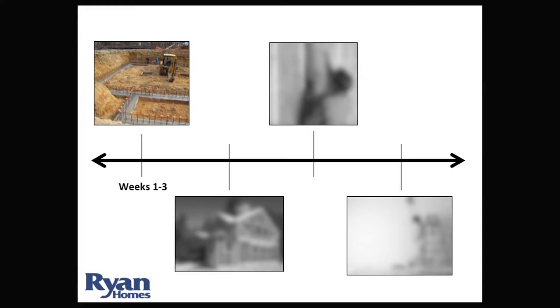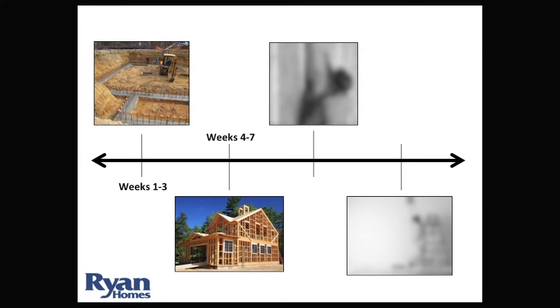Ryan Homes, which is a very well-established real estate group, provided me with their timeline of how they built a house. So in weeks one through three, this is when the foundation and the footing is put into a house — bulldozers would be on site moving the ground, and workers would be on site moving rocks and debris. Then in weeks four through seven, this is when the house starts to take shape, and the workers manually put up the skeleton of the house. This is also when they would install the heating, cooling, electrical and plumbing systems.